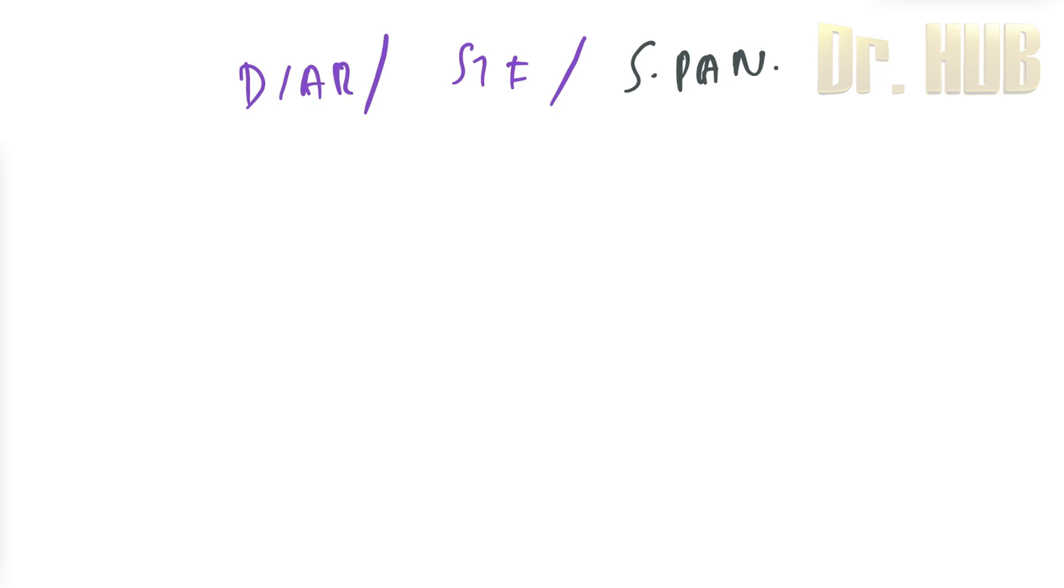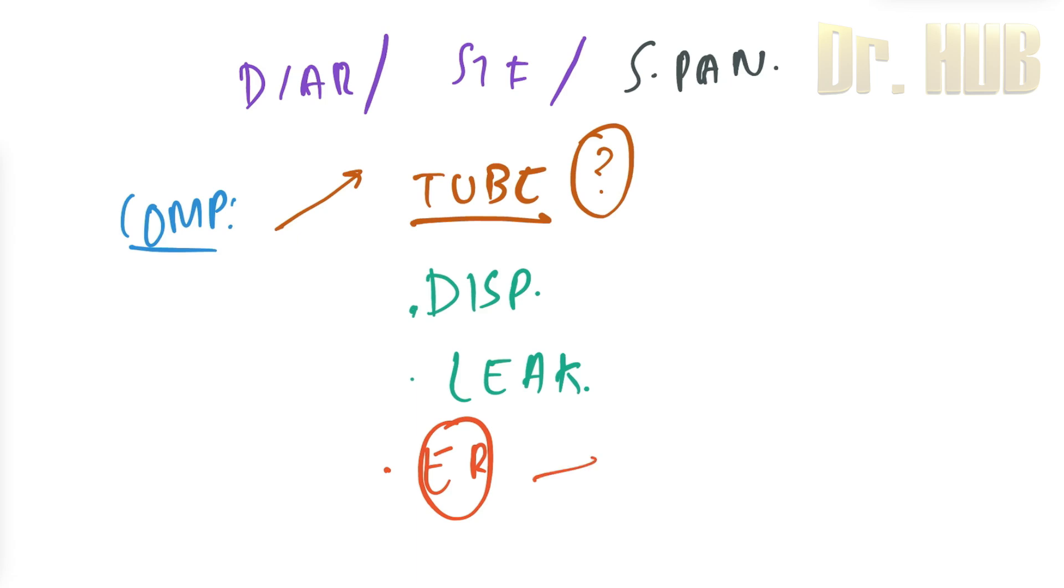Next, what are the complications of enteral nutrition? Complications include tube-related complications. What are the tube-related complications? That is, it can be bowel position, displacement, blockage, leakage, as well as erosion. Erosion of what? Erosion of the skin as well as the mucosa.